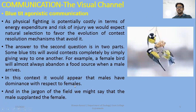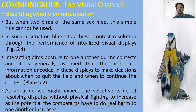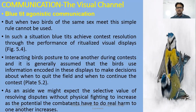Males have dominance. An observation shows that males have dominance and females show submissive behavior. In the field, usually males show the dominant behavior. But if two males fight, there will be more agonistic behavior and chances of fighting. But when two birds of the same sex meet, this simple rule cannot be used. In such a situation, if two males achieve contest resolution, they do so through performance of ritualized, refined visual displays. Interacting birds use their posture during a contest, and it is generally assumed that birds use information encoded in these displays to make decisions about when to quit the field and when to continue the contest. In the contest, visual displays are more helpful rather than physical fights.